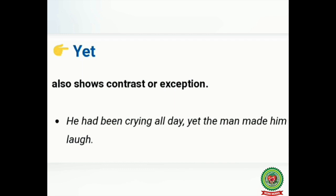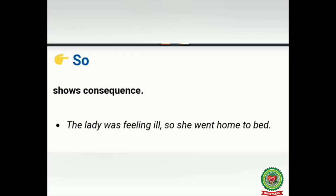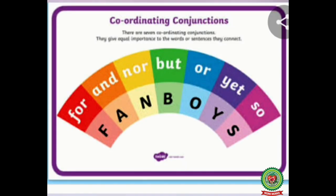The next coordinating conjunction is 'yet.' 'Yet' is also used to show contrast or an opposite idea. For example: 'He had been crying all day, yet the man made him laugh.' Here 'yet' shows the contrast between crying and laughing. The next coordinating conjunction is 'so.' 'So' is used to show effect, result, or consequences. For example: 'The lady was feeling ill, so she went home to bed.' We use 'so' to show that she went home because she was feeling ill.